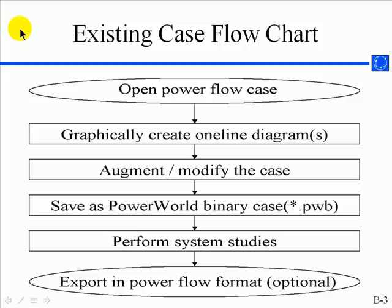Typically the procedure you might go through would be to open a PowerFlow case from a text-based source, create or edit a one-line diagram using the graphic interface discussed in the first training session, then augment the data with supplemental information such as generator cost models or reactive power capability curves. You can save the work in a binary PWB format, then perform advanced studies using tools like contingency analysis, available transfer capability, and optimal power flow. When finished, you might export the data back into a text-based format such as a PTI RAW file or EPC file.